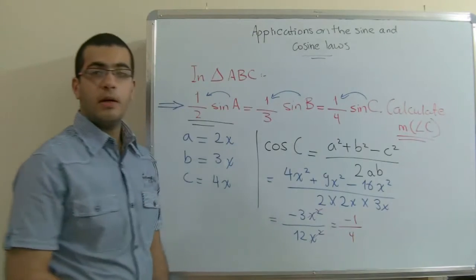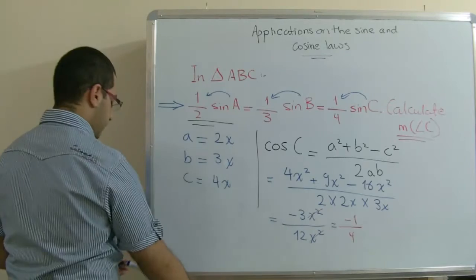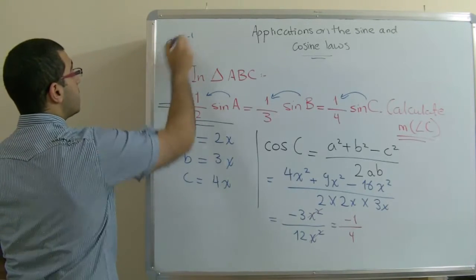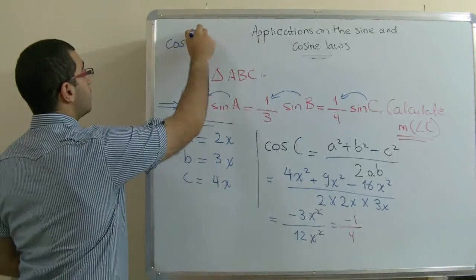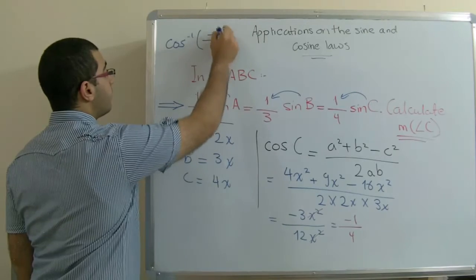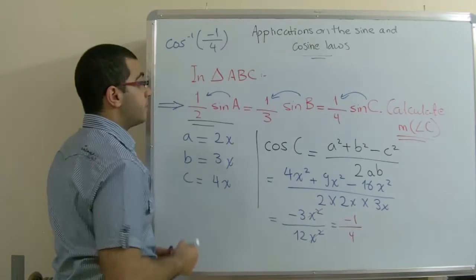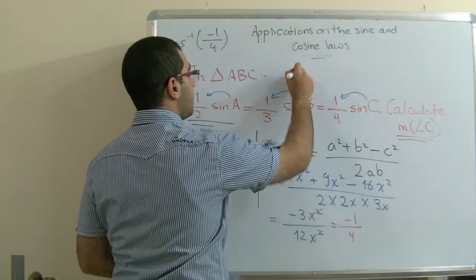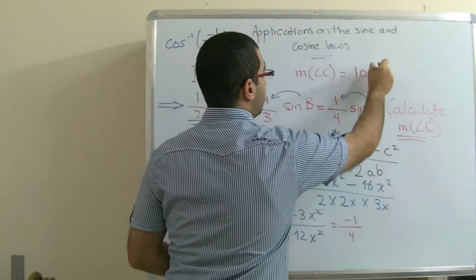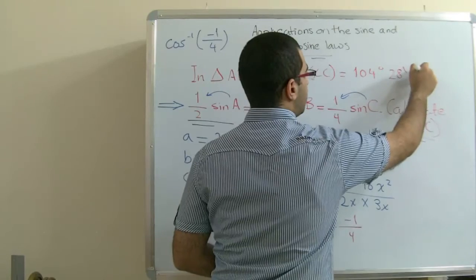On the calculator, if you press shift cosine to let it appear for you like this, cosine of power negative 1 with a correct open bracket, and into negative 1 over 4, you will get the measure of angle C, which is approximately 104 degrees, 28 minutes, 39 seconds.